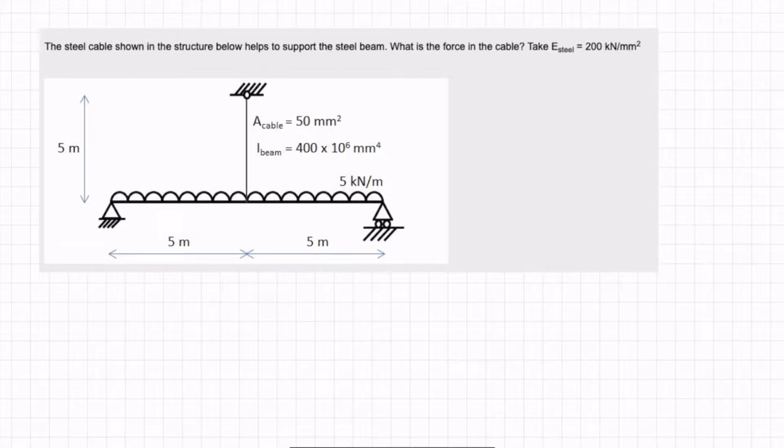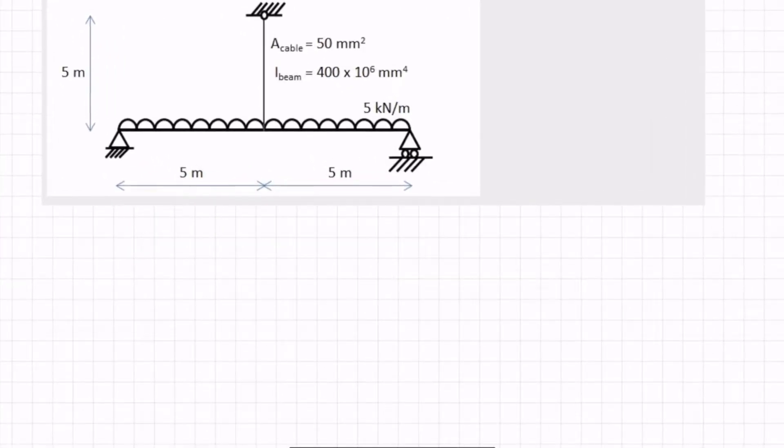So there are a few steps to this. First we need to have our equations of compatibility. I'll explain that as we get there. We need to find out the deflection of the beam if the cable weren't there, and use virtual work to find out the deflection of the beam after the support is being applied. And the final deflection is equal to the extension of the cable. Let's do that.